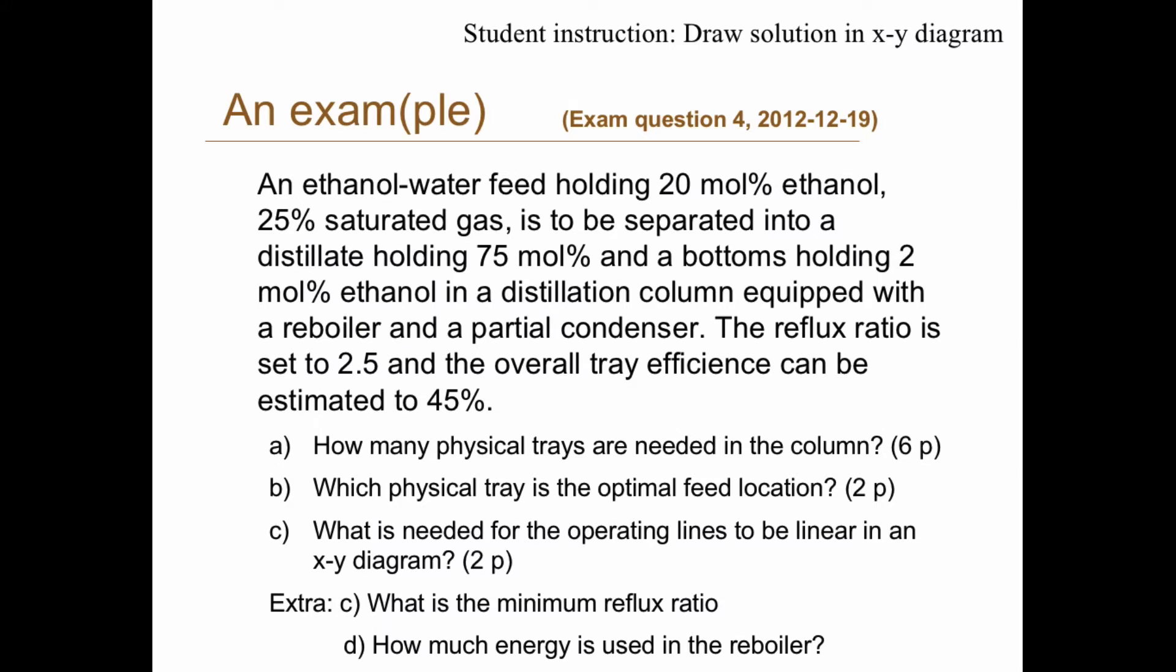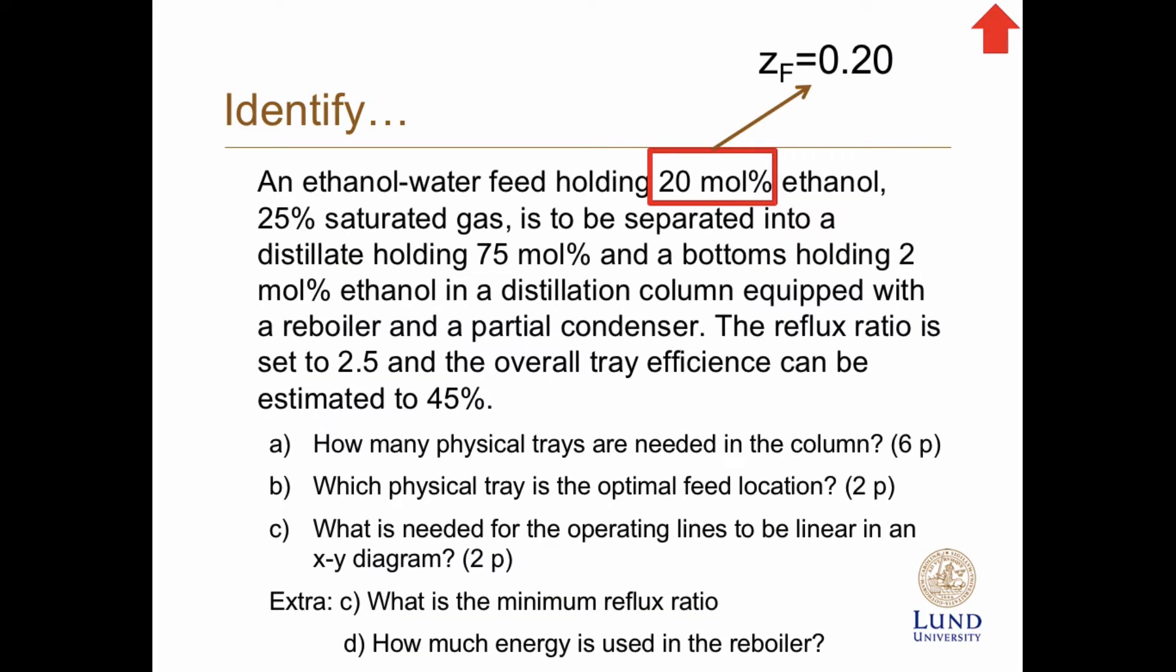So let's identify the numbers here. We have a feed with 20 mole percent ethanol, so zF equals 0.20. Distillate should hold 75 mole percent, so xD is 0.75.